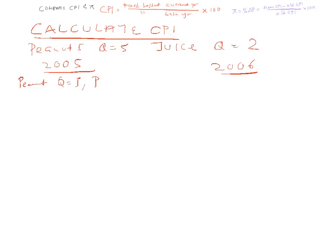We've got the quantity is 5, and let's say in 2005 the price is $2. So price times quantity, the peanuts is $10. In 2006, the quantity is still 5 because we fixed the quantity. Let's say the price went up to $3. So price times quantity and the peanuts will be $15.